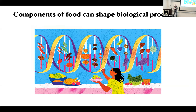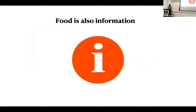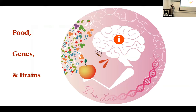To me, this story is a quintessential example of how components of food can really profoundly and intimately shape biological processes. When I think of food, I like to think of more than fuel or energy, but also as a type of information. The goal of my lab — I've been in Michigan since 2015 — is to really understand this intimate connection between food, genes, and brains. We have two main questions.